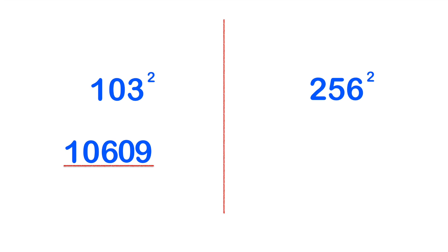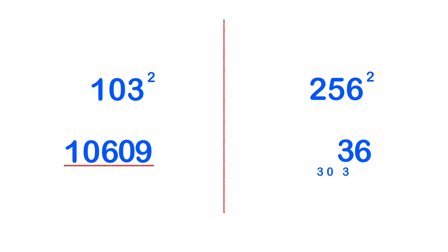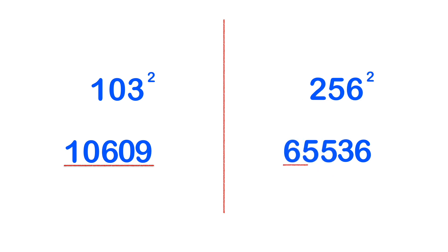Let's have a look at 256 squared. Split the number up into two sections. 6 squared equals 36 — put the 6 in the answer line, carry the 3. In step 2, 25 times 6 is 150. Times by 2 gives us 300. Adding the 3 from before gives us 303. So we put 3 in the answer line and carry the 30 across. In step 3, 25 squared is 625. Adding the 30 from before gives us 655. So the final answer is 65536.